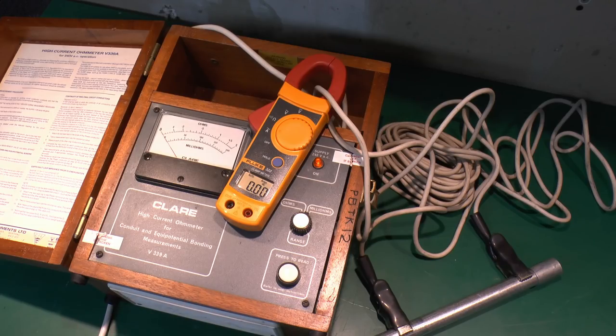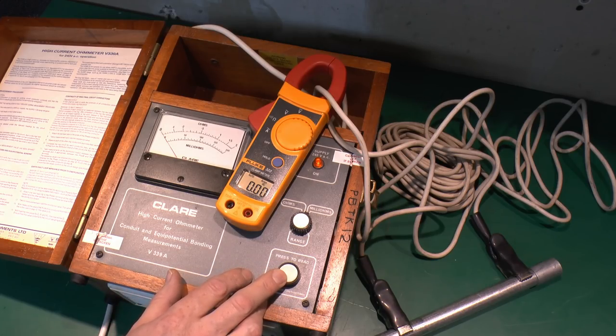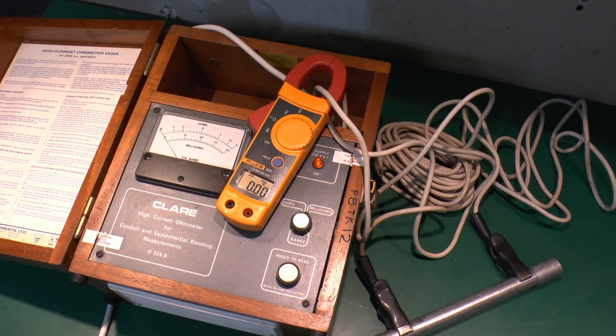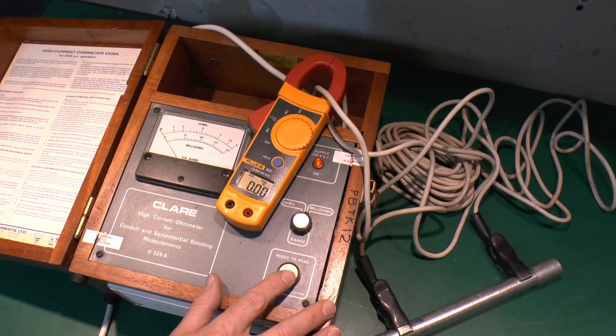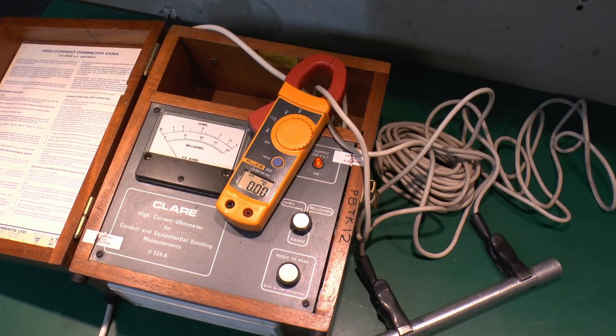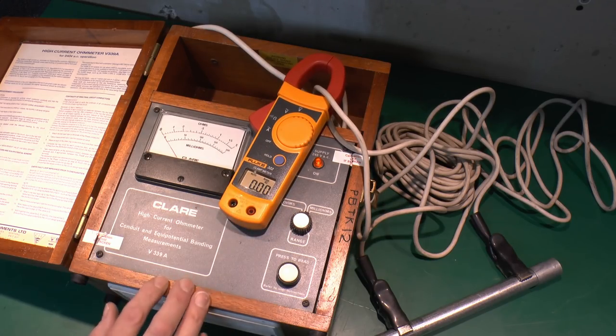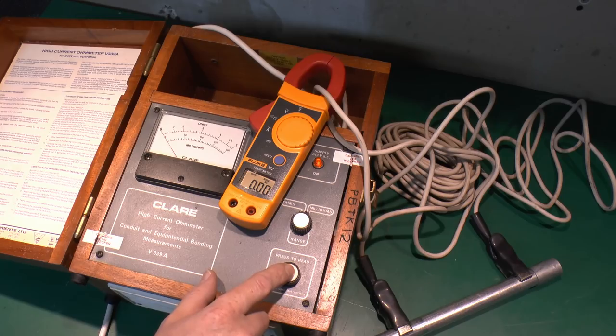Now one thing this does have, because the current it uses is so large, this actually has a thermal cutout inside, so if you hold the button down for an extended time, something inside will heat up and then it will just cut off the thing. So the idea here is you don't apply the test for an extended time, you press the button, read the reading here, and then that's pretty much the test complete. It's certainly not intended to apply the current for a long period of time, and so it does have that thermal cutout inside.